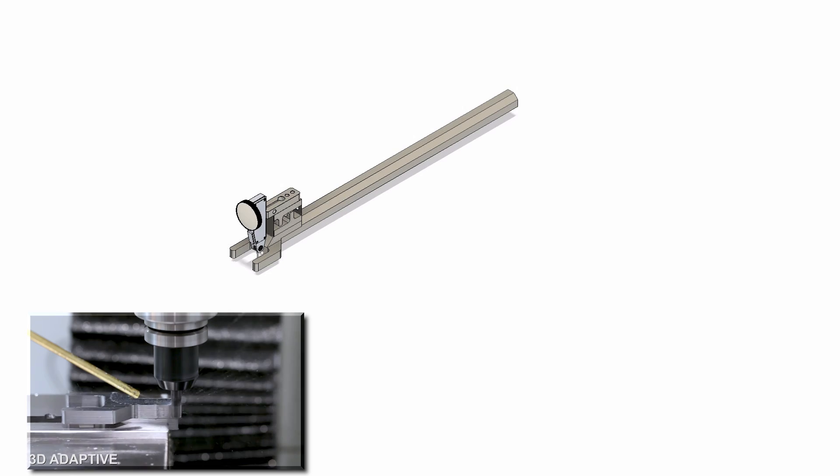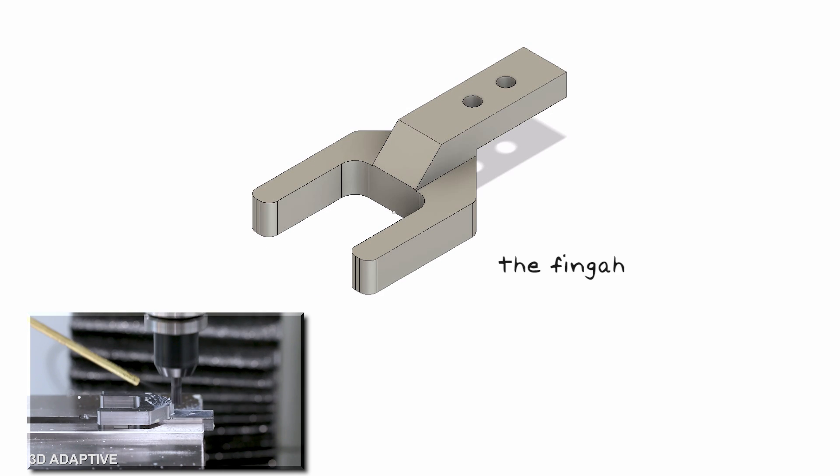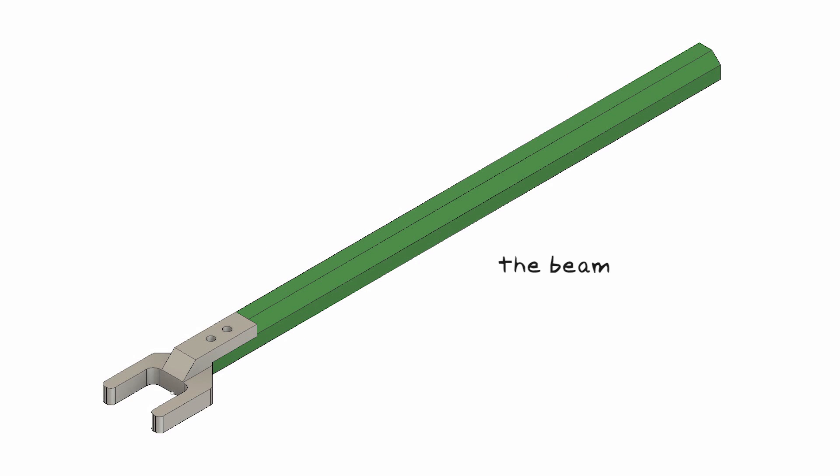Hi folks! Last week we machined the finger part of this shallow test gauge. Today let's machine the long piece that we're calling the beam as well as the slider that moves along it. Welcome to another Wednesday Widget.